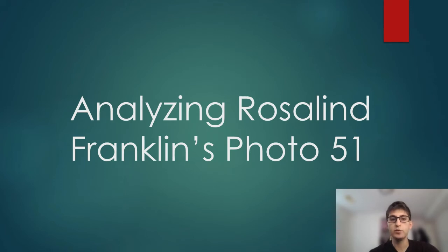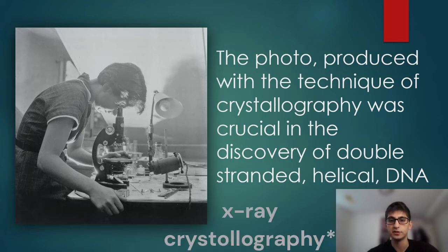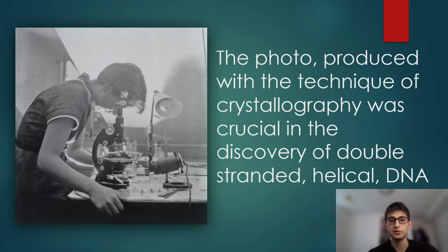Here, I'll be going over how Photo 51 helped in the discovery of the DNA structure. We know Photo 51 is one of the most important pieces in the history of chemistry. The technique used to obtain the image is X-ray crystallization, where X-rays are directed at the sample and the diffraction of the X-rays by the electrons of the molecules of the sample are recorded by a camera.